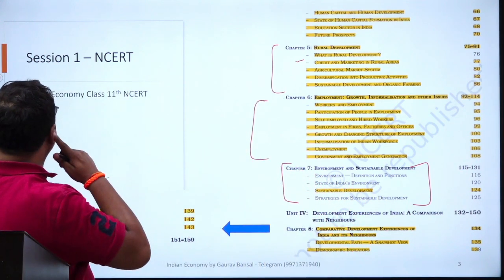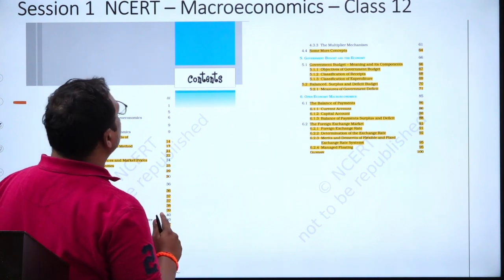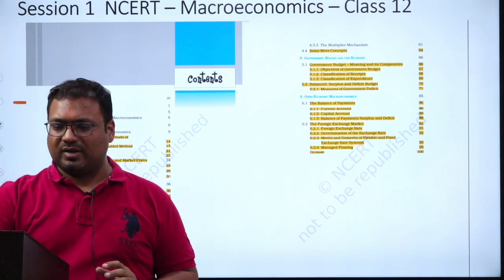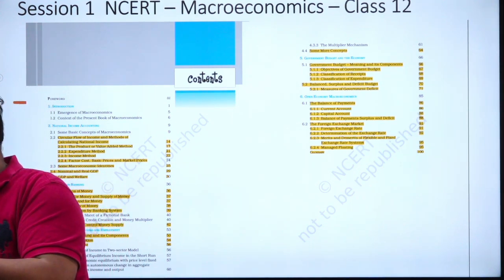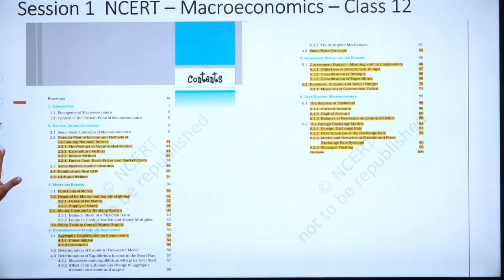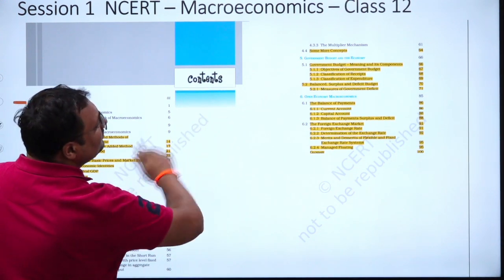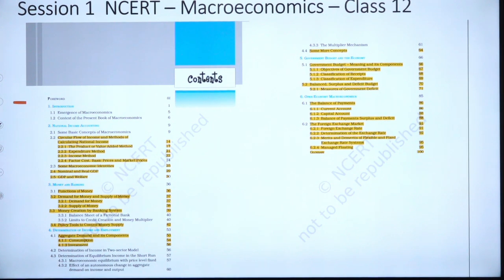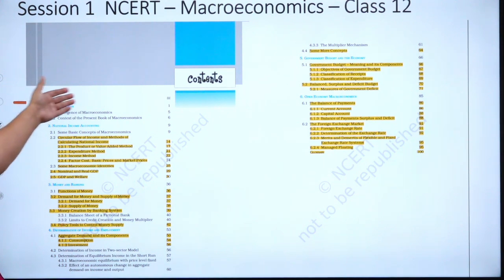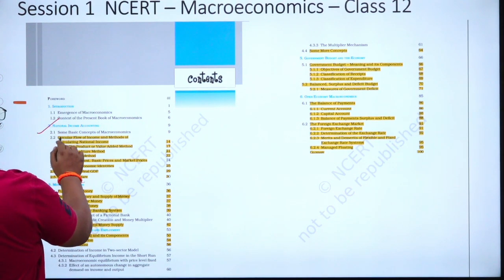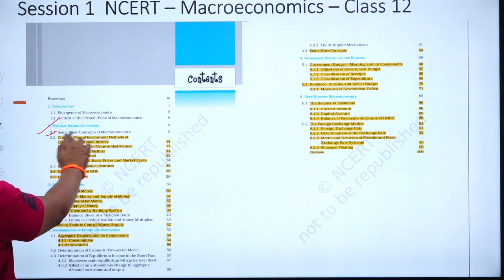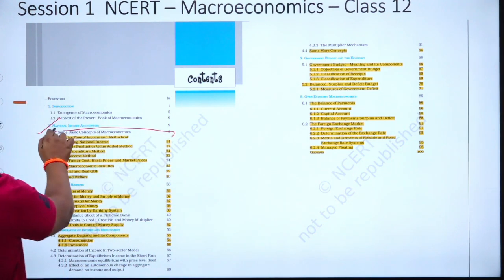Now we come to the class 12 NCRTs. This is the class 12 microeconomics NCRT. There are six chapters in microeconomics. We do not have to cover chapter one — the emergence of micro and macroeconomics or context of the present book. We have to cover the entire chapter two, including all parts.